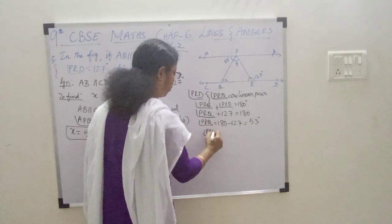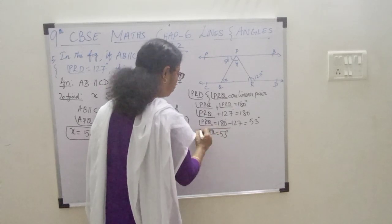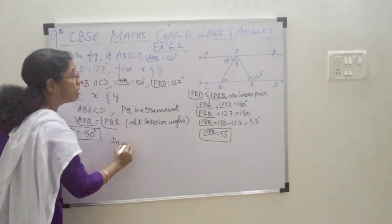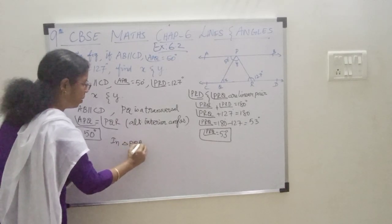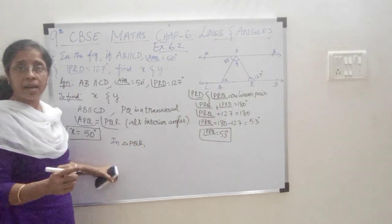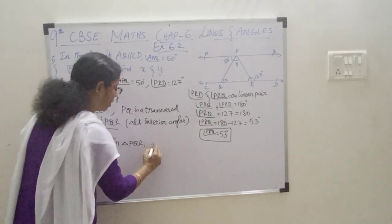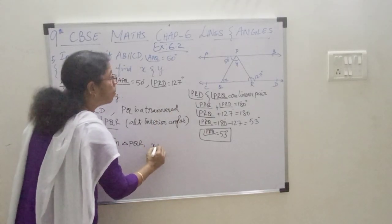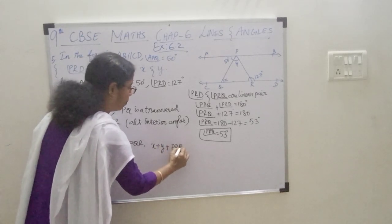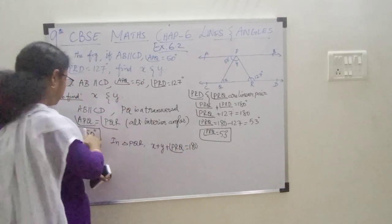Angle PRQ, we found this as 53 degrees. So, in triangle PQR, you know the sum of the angles in a triangle is equal to 180 degrees. So, one angle is X, plus Y, plus angle PRQ is equal to 180 degrees.